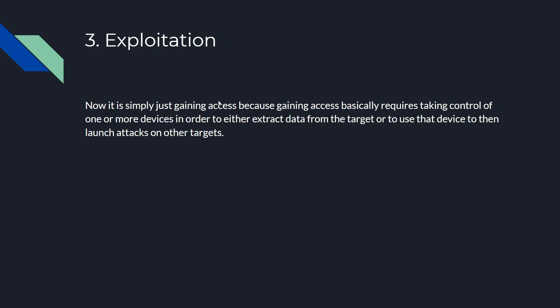The third phase of a penetration test is exploitation — simply gaining access. Gaining access basically requires taking control of one or more devices on a network to either extract data from the target or use that device to launch attacks on other targets. This last part is defined as pivoting in the real world. We are not going to cover pivoting in this course because it is a lot more complicated and controversial to teach on YouTube.